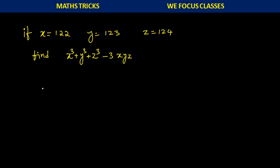We should be able to solve this problem in maximum 10 seconds. If you put 122 in place of x, 123 in place of y, 124 in place of z, the calculation will become lengthy. So in order to do this problem, I will first explain what is x cube plus y cube plus z cube minus 3xyz, then we will come back to this problem.